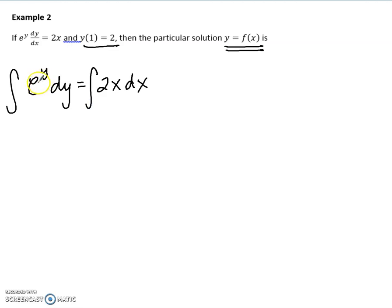Then we're ready to integrate. So the integral of e to the y is just e to the y. Over here, I'm going to go up by a power and divide by 2. So that just gives me x squared. But remember, plus c.